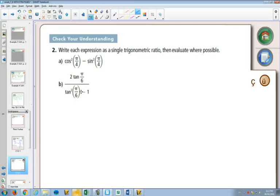So what would that mean? If cos² minus sin² of the same angle equals one of the double angle formulas for cos, what's our angle? π/4. Does this simplify to anything?